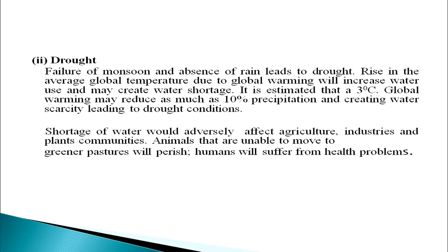Next is drought. Failure of monsoon and absence of rain leads to drought. Rise in the average global temperature due to global warming will increase water use and may create water shortage. It is estimated that a 3-degree Celsius rise in global warming may reduce precipitation by as much as 10 percent, creating water scarcity leading to drought conditions. Shortage of water would adversely affect agriculture, industries, and plant communities. Animals unable to move to greener pastures will perish, and humans will suffer from health problems.